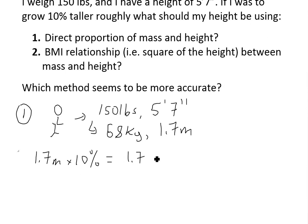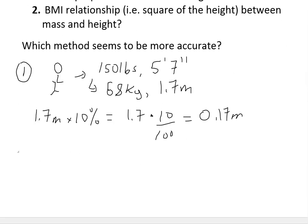this is just simply equal to 1.7 times 10 over 100. You could just cancel these. This is the same thing as dividing by 10. Just plug this into the calculator. You'll just get 0.17 meters.